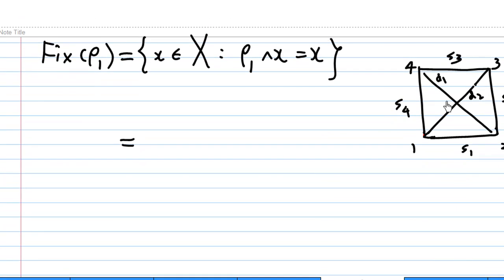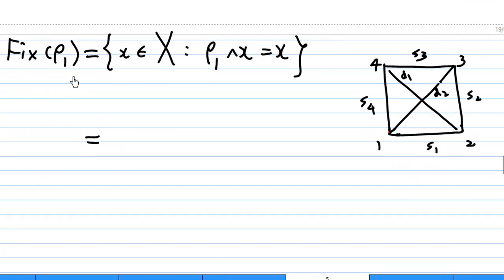Now let's look at Fix(ρ₁). Remember, ρ₁ is rotation of 90 degrees anticlockwise about the center of the square. Since we know rotation will fix the center of a rotation, unfortunately the center of the rotation is not in the set X. So therefore, Fix(ρ₁) is empty.